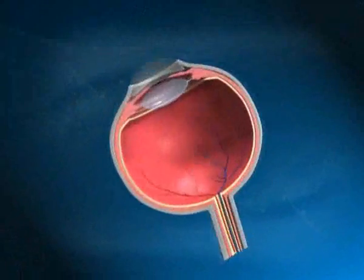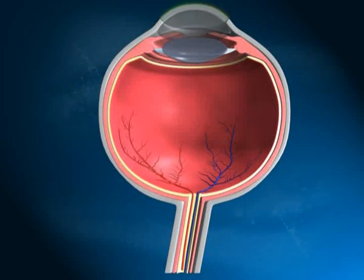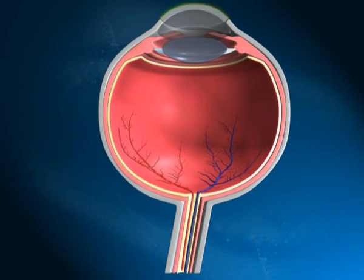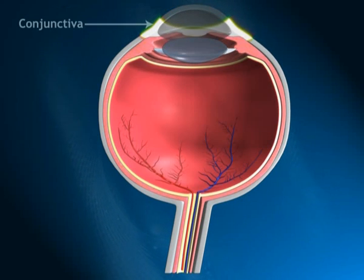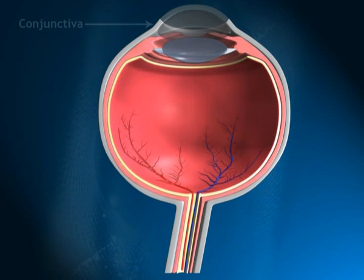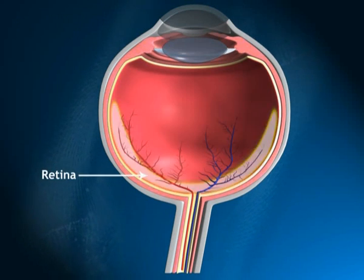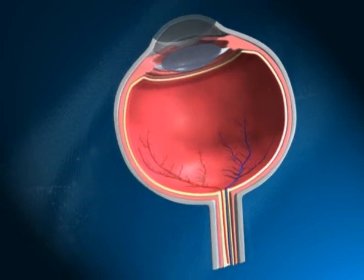Normal vision and glaucoma. The transparent part of the eye located in front is known as the cornea. An extra layer called the conjunctiva also covers the front part of the eye. The back of the eye is called the retina.